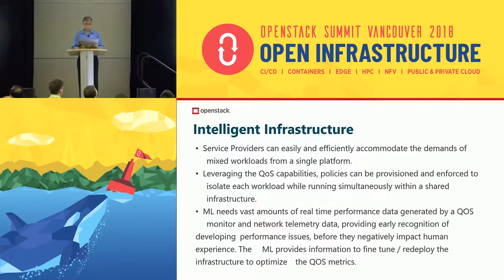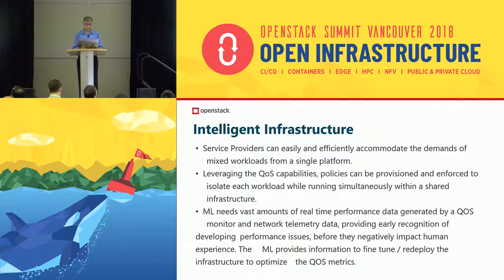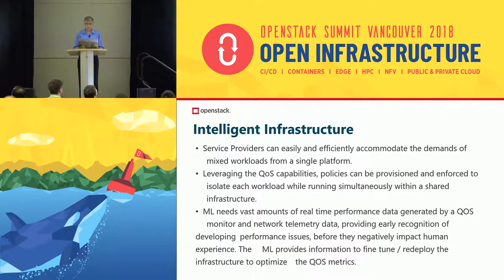With an intelligent infrastructure deployment mechanism, we can realize intelligent infrastructure — infrastructure that accommodates the dynamic demands of mixed workloads. Optimized behavior is achieved by ensuring zero or minimal QoS violations. The machine learning algorithm needs to receive large amounts of real-time performance data from embedded monitors set up on QoS metrics, together with network telemetry data. This data is used by the ML engine for training and model building.